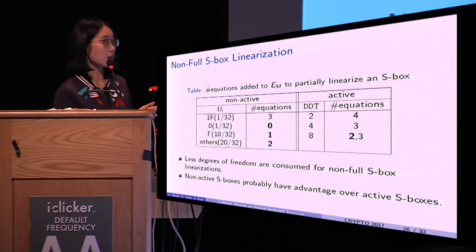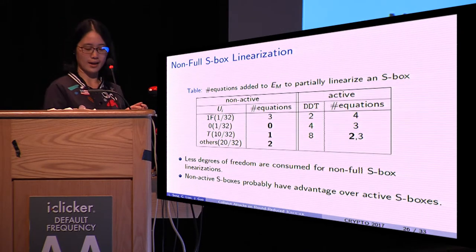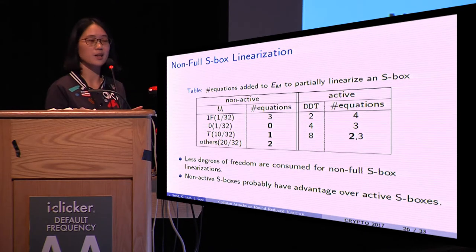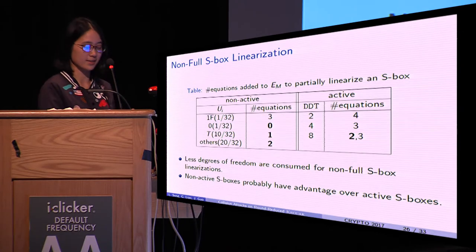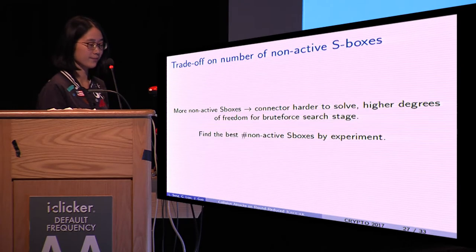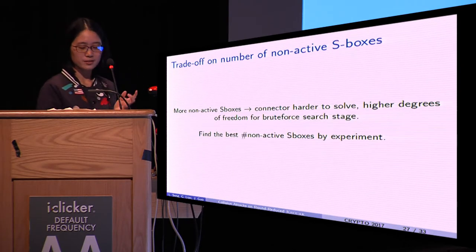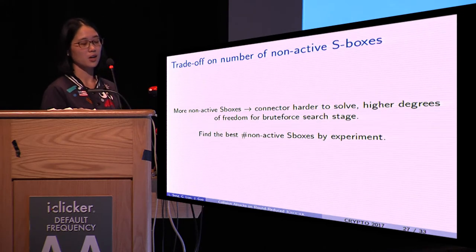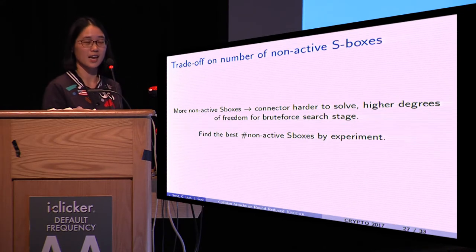From the table, it is also learned that non-active S-boxes probably have advantage over active S-boxes. However, if there are more non-active S-boxes, it would be harder to construct connectors.